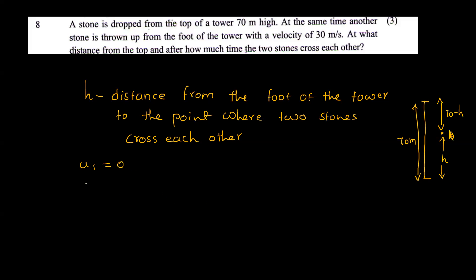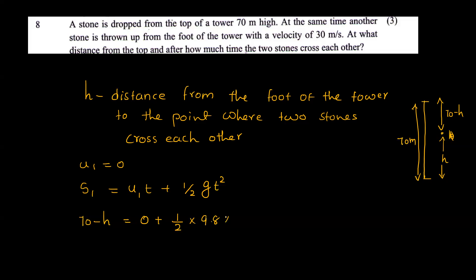For the dropped stone, S1 equals u1·t plus half g·t². Since u1 is zero, 70 minus H equals half into 9.8 into t squared, that is 70 minus H equals 4.9t squared.